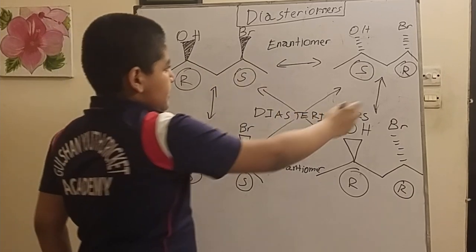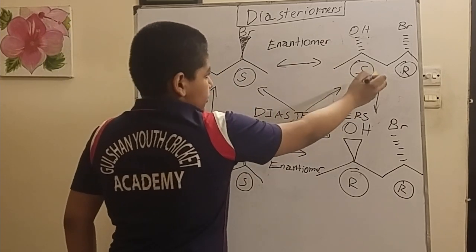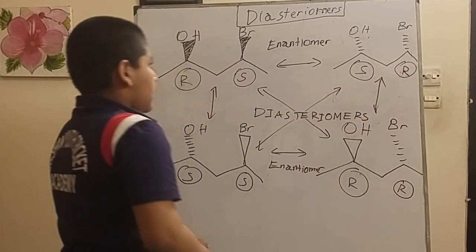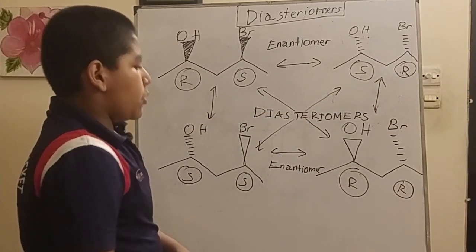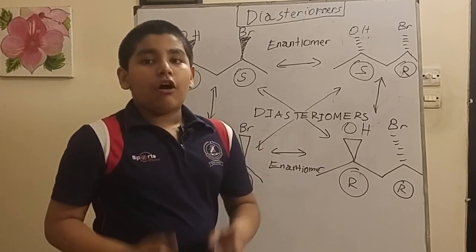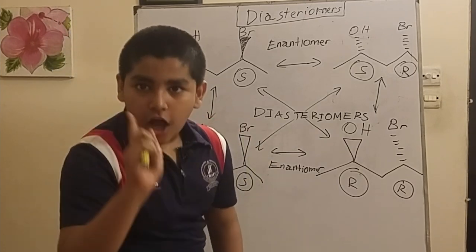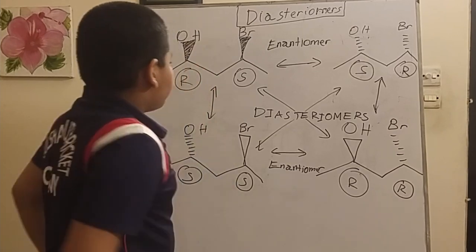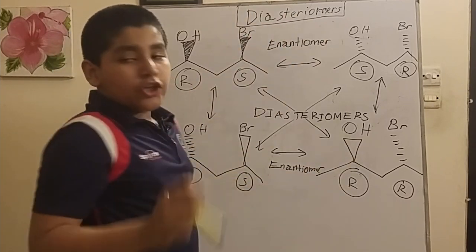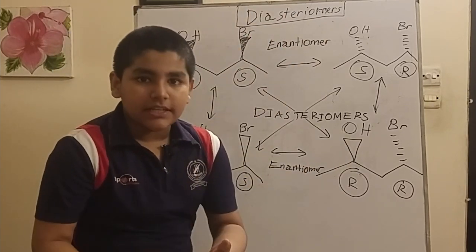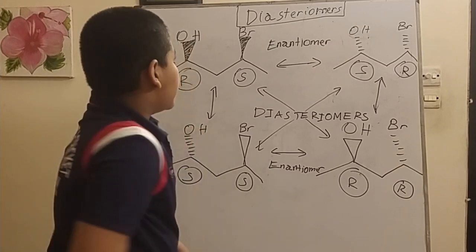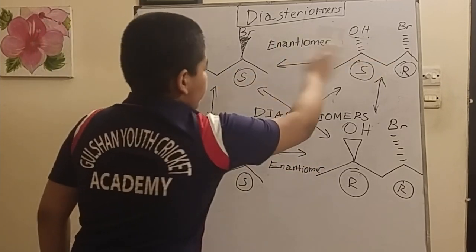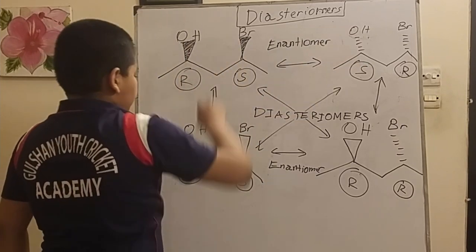In this example, we can see that an enantiomer is basically the inversion of each chiral stereocenter. The R turned into an S in this molecule, and the S turned into an R in this molecule. But diastereomers is the inversion of one, not both, but one stereocenter, and they are not specifically mirror images of one another.